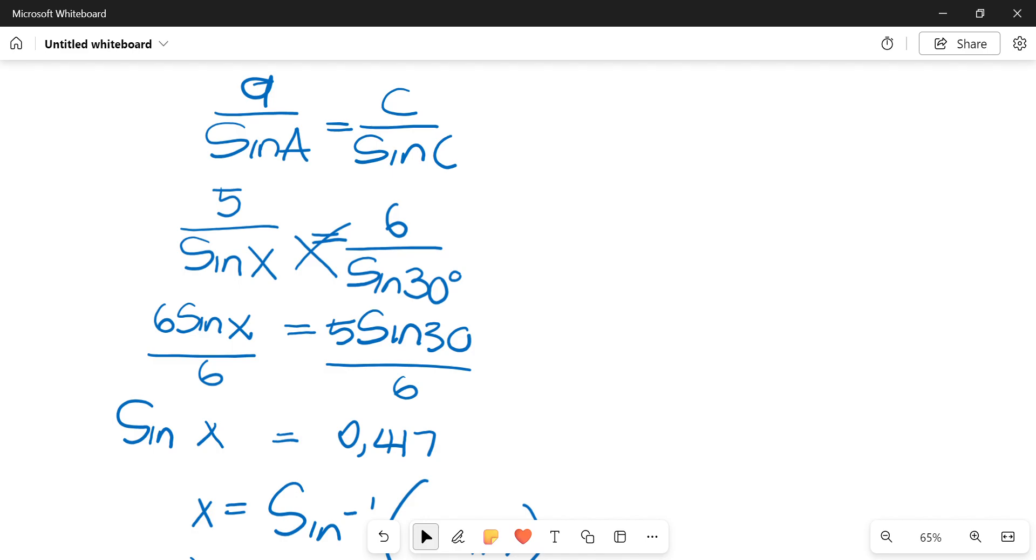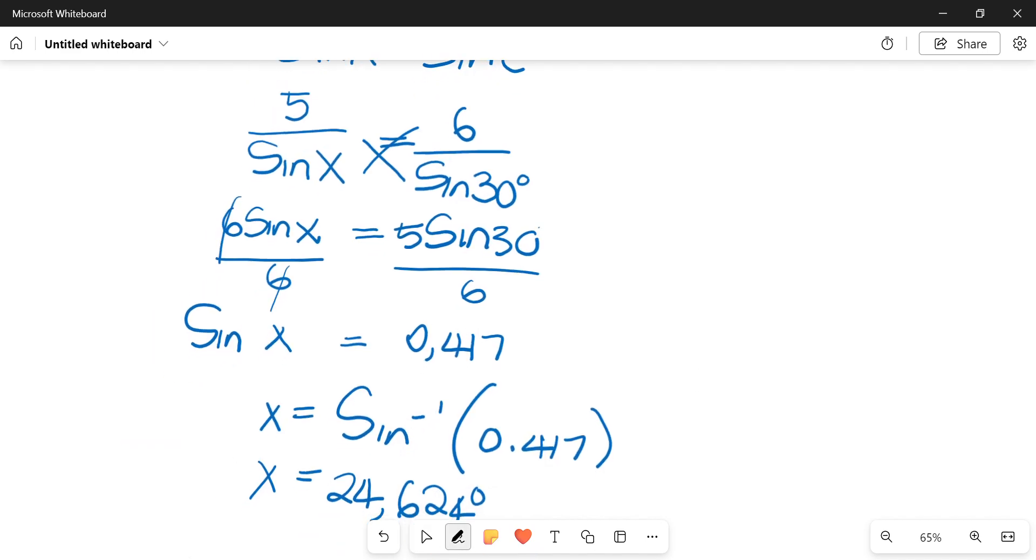Then essentially, we're trying to get to a point where we have our X as a subject of the formula. Then we divided both sides by 6. Then we ended up with sine X on one side. And on here, I just solved for this variable, I just plugged it into the calculator to simplify it. Then from that point on, you need to essentially get your sine to the other side. On your calculator, you're not just going to say sine of 0.417, it'll give you a wrong answer. So you're going to say shift sine, then 0.417.